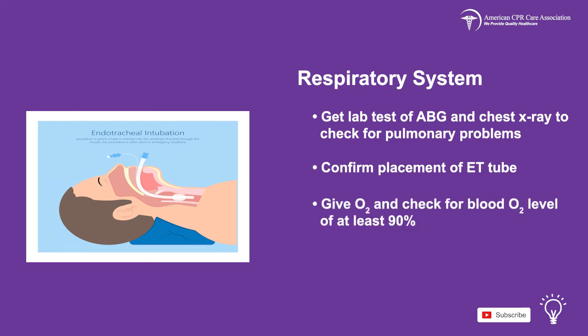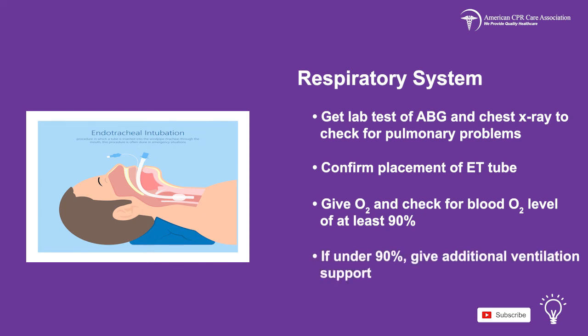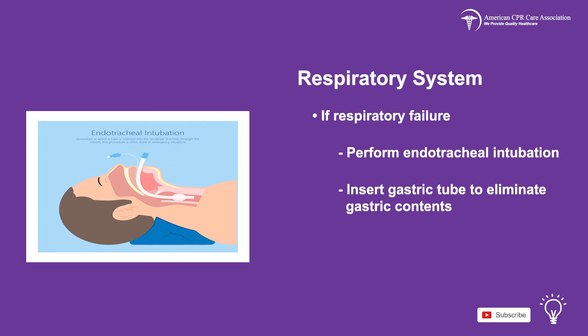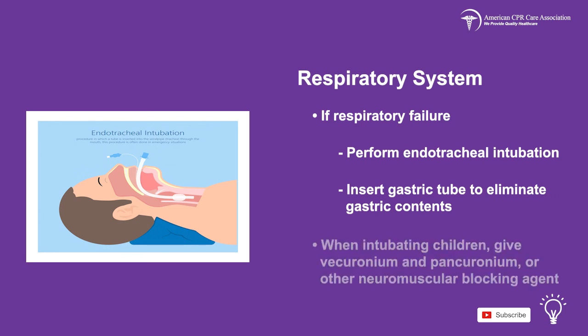Give the patient oxygen and check for a blood oxygen level of at least 90%. If their level is under 90%, give them additional ventilation support. If a child experiences respiratory failure, you need to perform an endotracheal intubation and insert a gastric tube to eliminate gastric contents. When intubating children, give them vecuronium or another neuromuscular blocking agent, as this facilitates intubation.